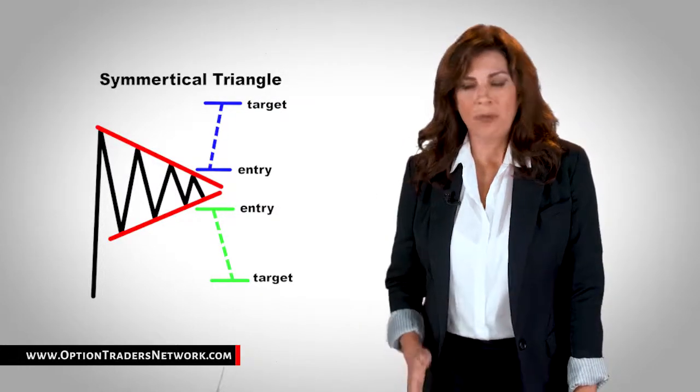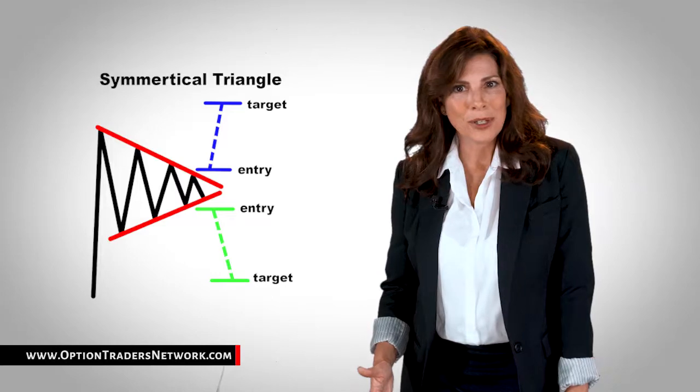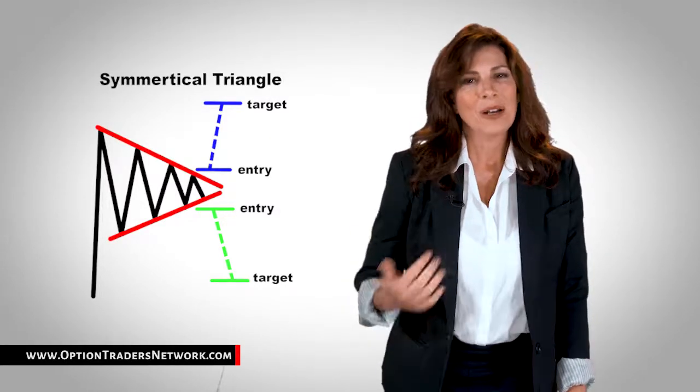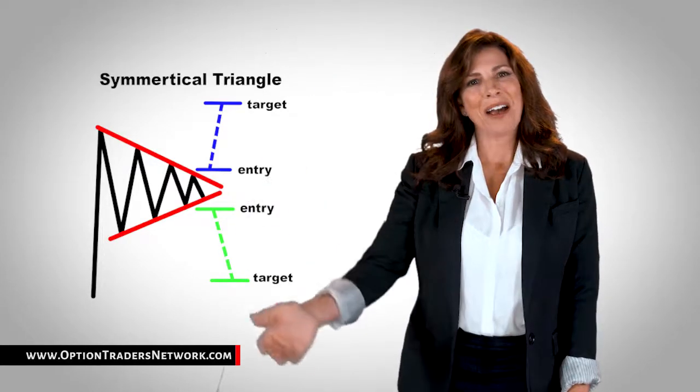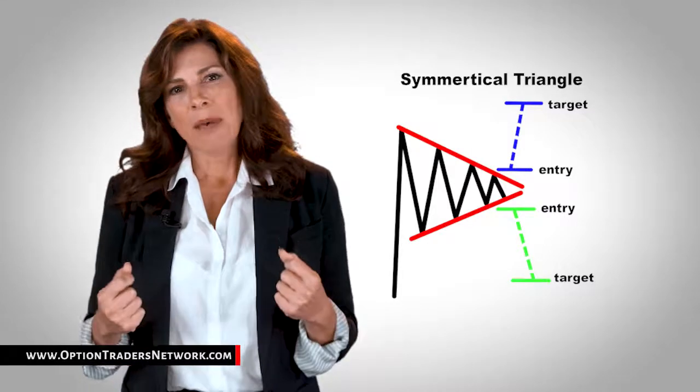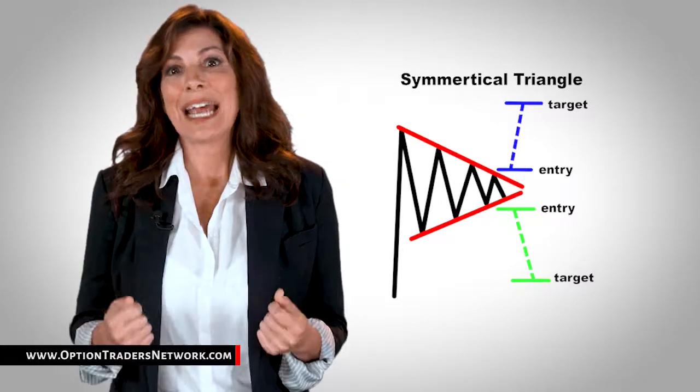In the chart above, we can see that neither the buyers nor the sellers could push the price in their direction. When this happens, we get lower highs and higher lows. As these two slopes get closer to each other, it means that a breakout is getting near.